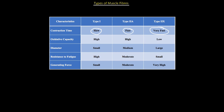Every human has a different percentage of each fiber type, which is why you see differences in athletes where one could run faster than another even on the same diet and training program. Scientifically speaking, that's just because they were born with a genetic advantage. For example, somebody like Usain Bolt has many more fast twitch muscle fibers, so the percentage of fast twitch outweighs his percentage of slow twitch muscle.